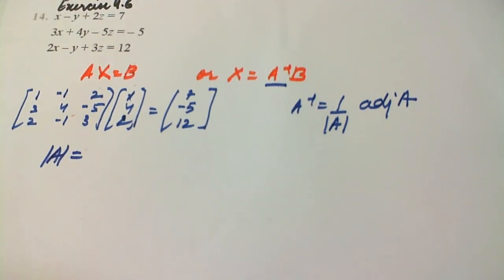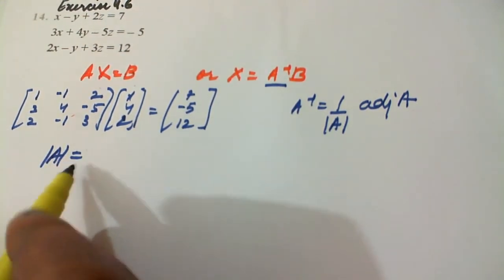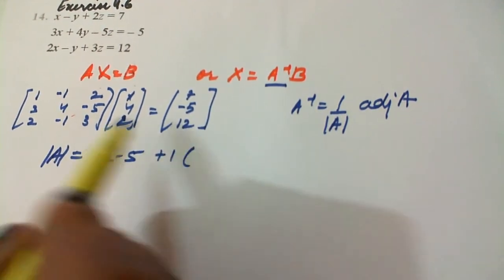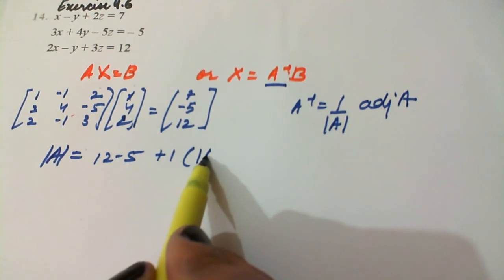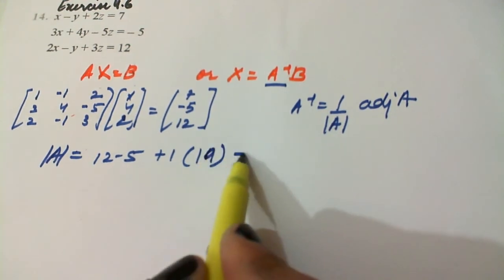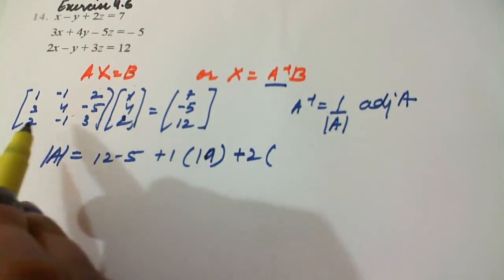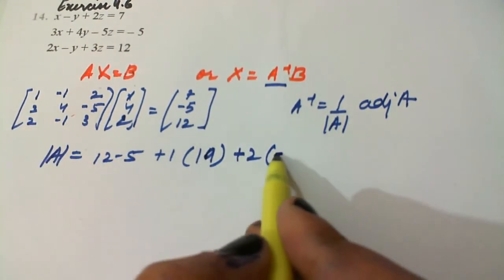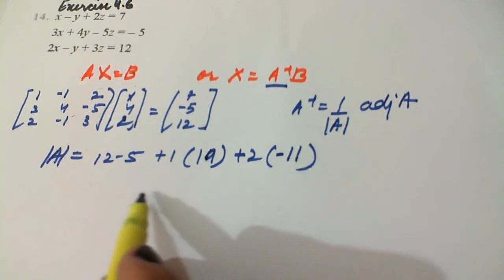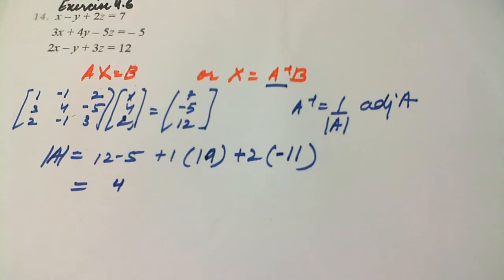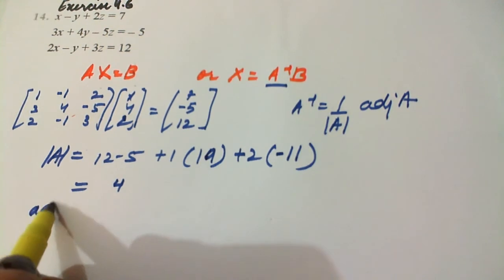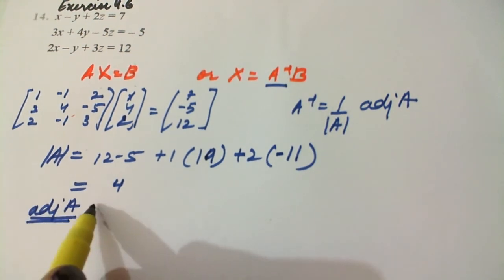So determinant A equals to 12 minus 5 plus 1 into 9 plus 10, that is 19, plus 2 into minus 3 minus 8, that is minus 11. So this will turn out to be nothing but 4.